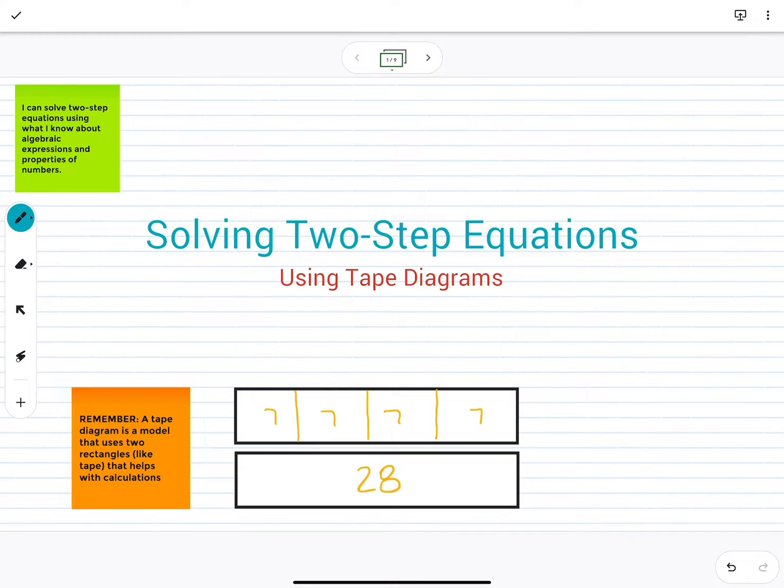Before we get into the example, we want to remind ourselves of what a tape diagram is and how we use it to solve equations. A tape diagram is a model that helps us to visualize equations. It uses two rectangles, like pieces of tape, and that's why we call them tape diagrams, and it helps us to calculate.